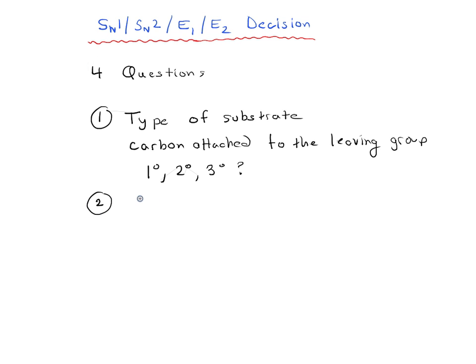The second question we're going to ask is going to be the type of nucleophile or base. So is it strong or is it weak? And we'll be able to identify whether something is a strong nucleophile, it might go down one pathway more than another. Or if it's a weak nucleophile, it might go down a different pathway or strong base, weak base, vice versa.